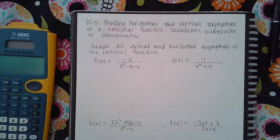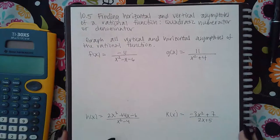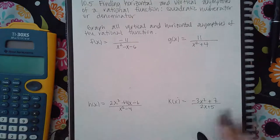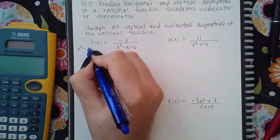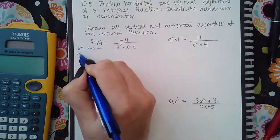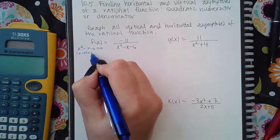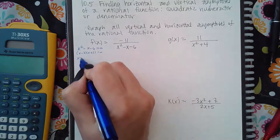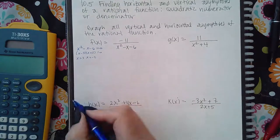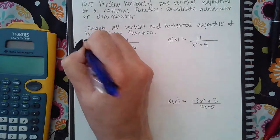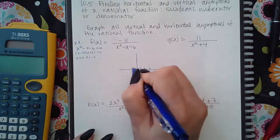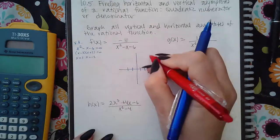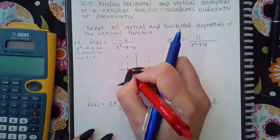Here we have finding horizontal and vertical asymptotes — graph all vertical and horizontal asymptotes. For vertical asymptotes, we take the denominator and set it equal to zero. This one I can factor pretty easily, giving x equals three and x equals negative two. These are the vertical asymptotes, so on the graph I'd place a vertical asymptote at each of those values.